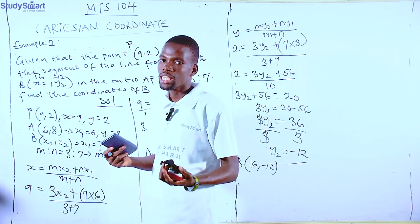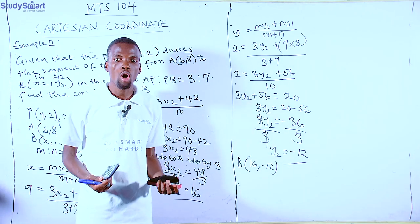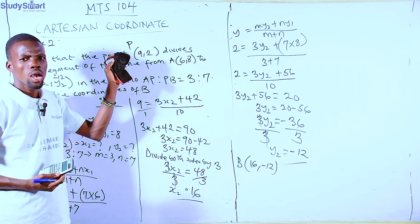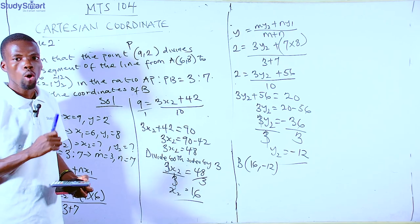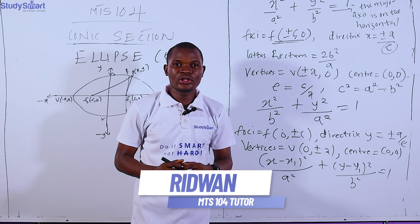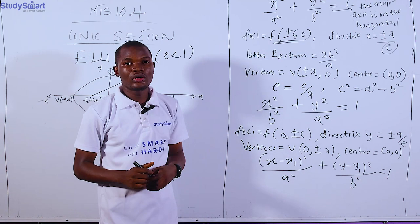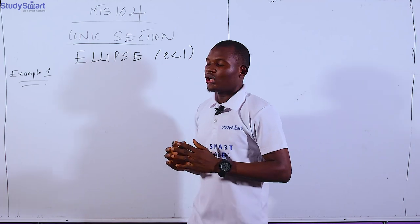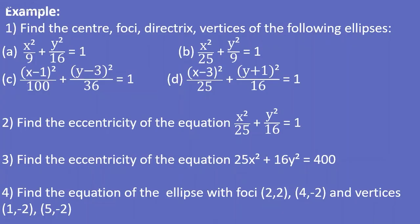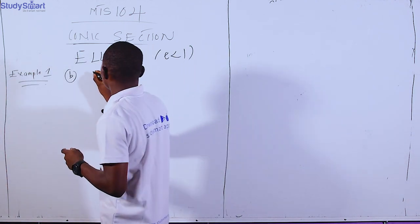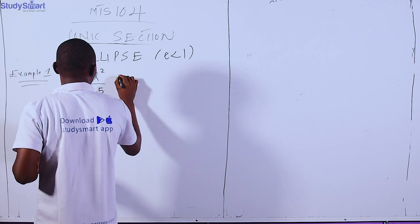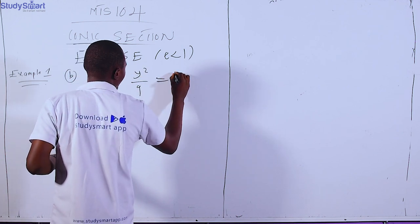In less than one minute I was able to use the calculator to calculate the value of x = 9, instead of using pen and paper. Now let's look at some examples under ellipses to explain all the properties. For the first example, we want to find the center, foci, directrices, and vertices of the ellipse. Starting with the case when the major axis is horizontal: x²/25 + y²/9 = 1.